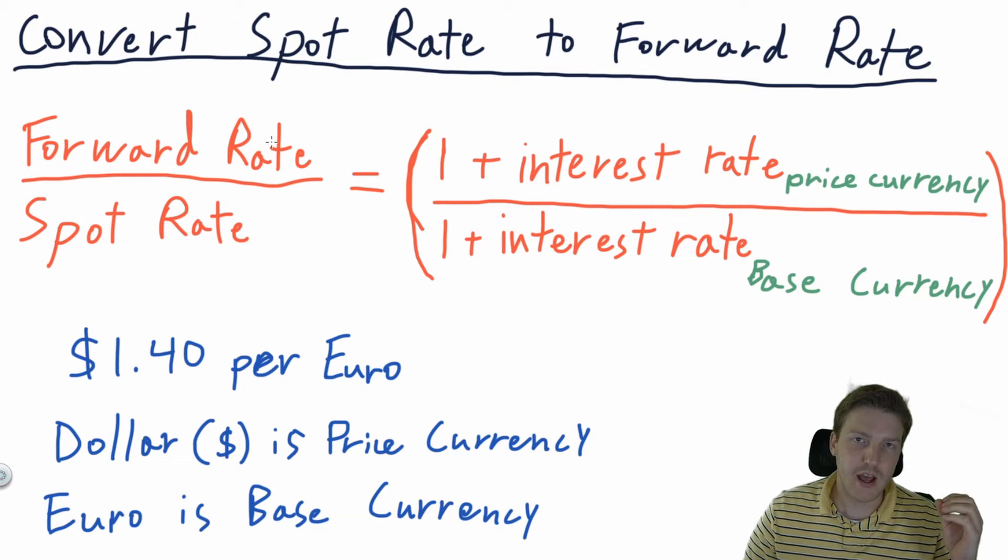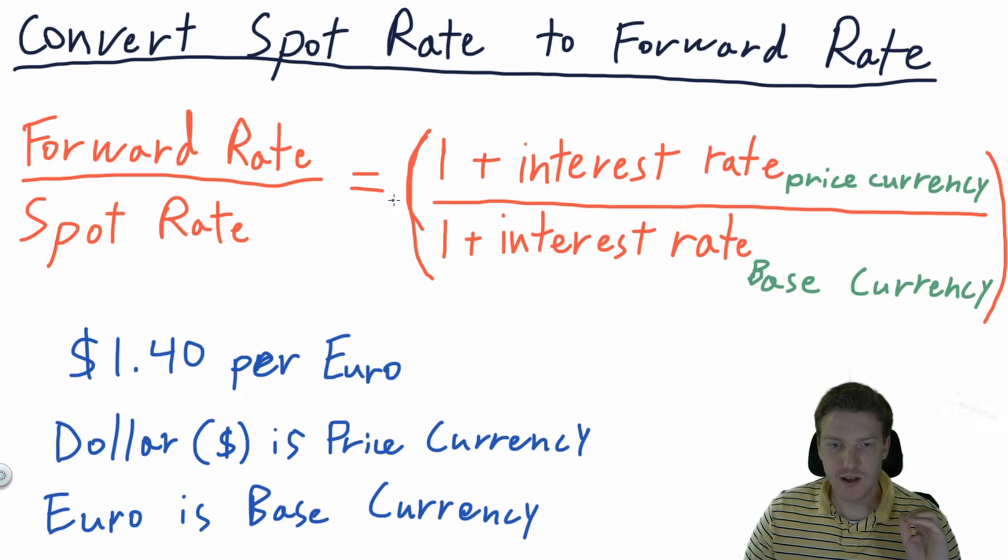Now let's discuss how you can convert the spot rate to the forward rate or the forward rate to the spot rate. So to do this, we're going to need one simple formula. And this formula relies on what is known as interest rate parity. So this formula works like this. You have the forward rate divided by the spot rate has to equal one plus the interest rate of the price currency divided by one plus the interest rate of the base currency.